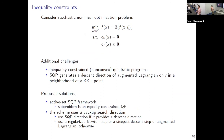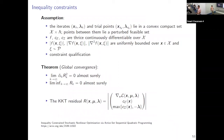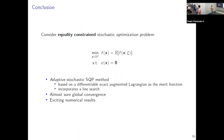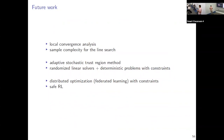For inequality constraints, the idea is to use active set SQP. The analysis is more challenging, but the main idea combines what I've presented with active set SQP, and we still obtain global convergence results. In conclusion, this is an attempt at an adaptive SQP with constraints. We've proven almost sure global convergence and have interesting empirical results on standard benchmarks. But there are many open problems.